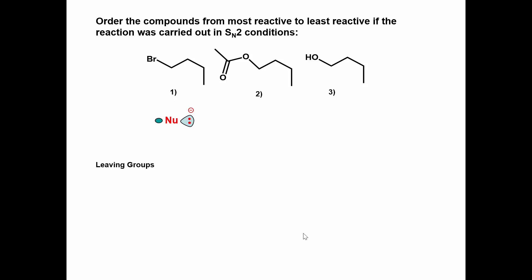In the first reaction the bromide ion is the leaving group. In the second reaction the acetate ion is the leaving group. In the third reaction the hydroxide ion is the leaving group.